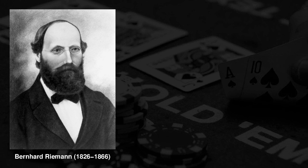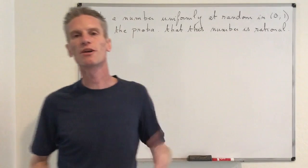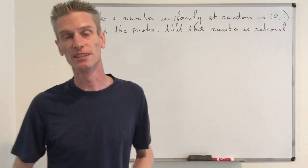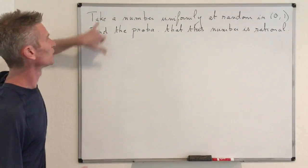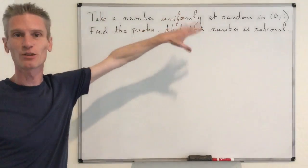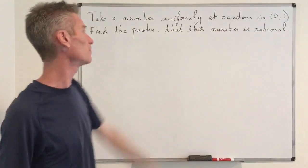Bernhard Riemann was a German mathematician, and what we call the Riemann integral is nothing less than the integral you learned in high school and used at the undergraduate level at university. To illustrate the limitation of the Riemann integral, the first thing we are going to do is look at a very simple probability problem.